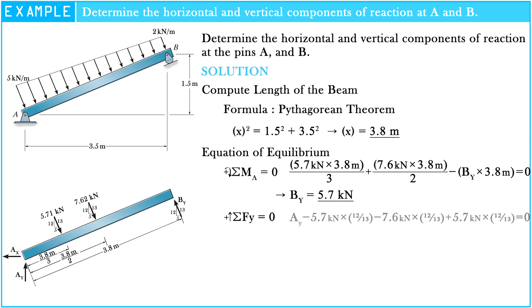The sum of forces along the y-axis equals zero. So: A_y minus 5.7 kN multiplied by 12/13, minus 7.6 kN multiplied by 12/13, plus 5.7 kN multiplied by 12/13, equals zero. Hence, A_y equals 7.01 kN.